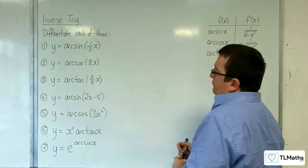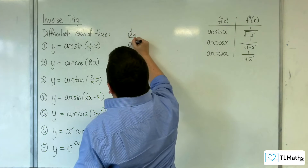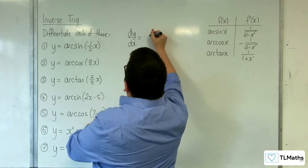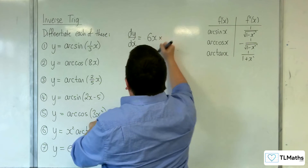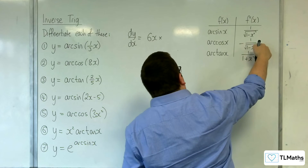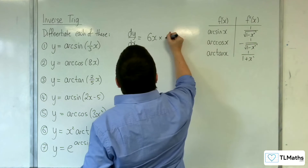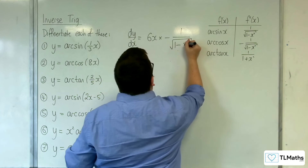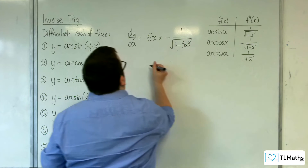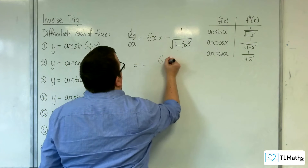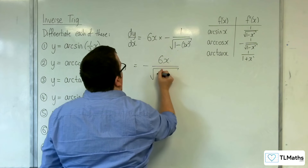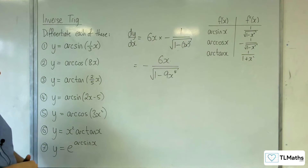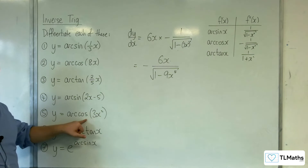Number five: y equals arc cosine of three x squared. The interior function differentiates to six x, so we have six x out the front. Arc cosine differentiates to minus one over the square root of one minus x squared, so with x replaced by three x squared we get minus six x over the square root of one minus nine x to the four. That is the derivative of arc cosine of three x squared.